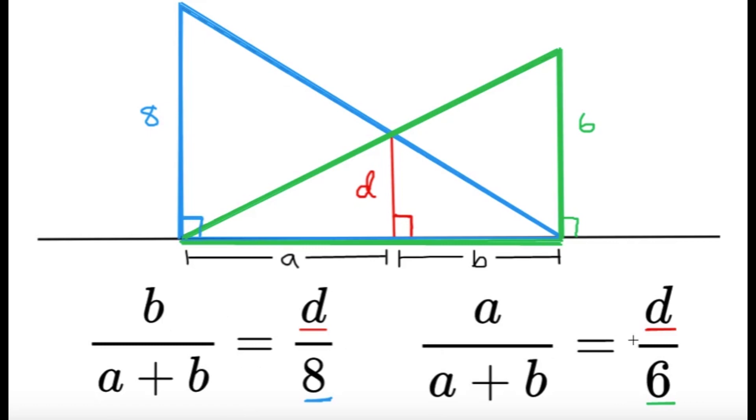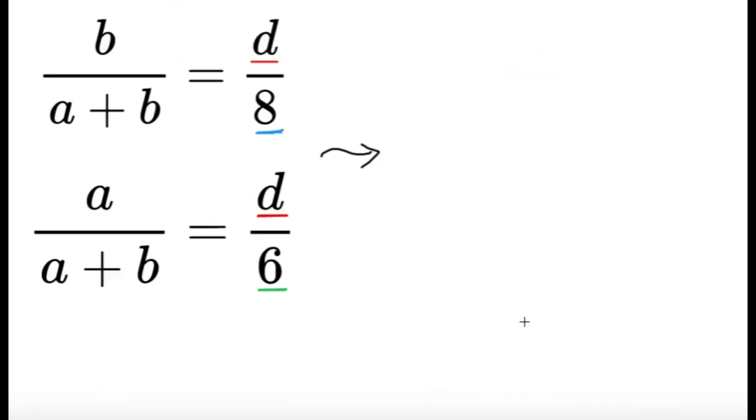Now, from these two formulas, we have a, b, and d. That's a lot of variables, but we can try to see something here. From the first and the second equation, it would be nice if I can add this one and this one, simply because if I add both of them, take a look at what happens. If I add b over a plus b and a over a plus b, it's going to be a plus b over a plus b, which we know it's going to just be 1.